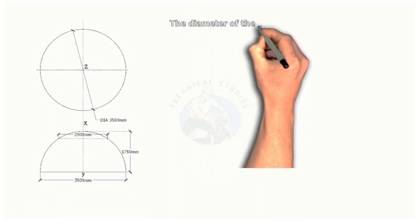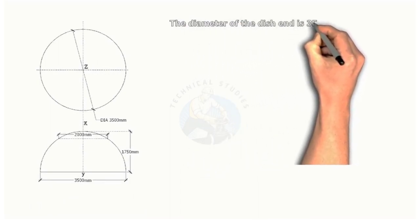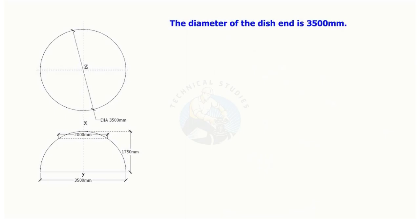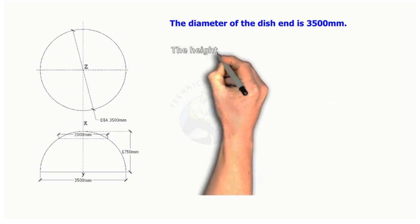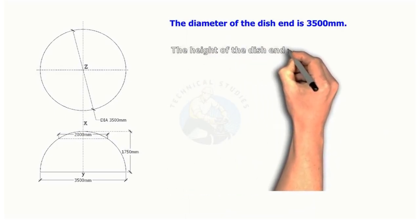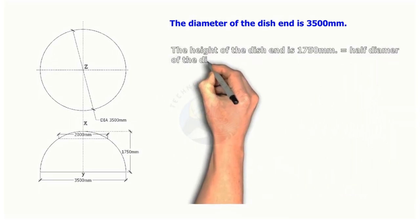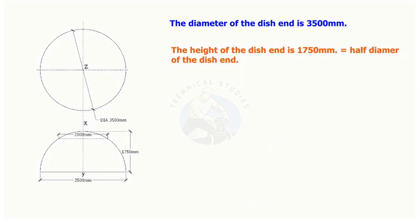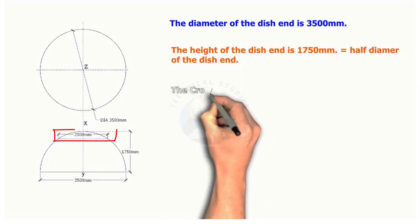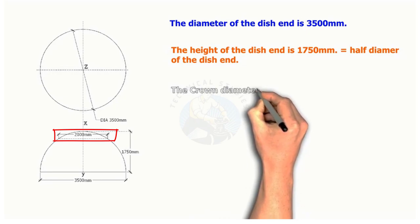Assume that the dish end's diameter is 3500 mm. The dish end will have a height of 1750 mm, which is equal to half of its diameter. Suppose the crown diameter is 2000 mm.